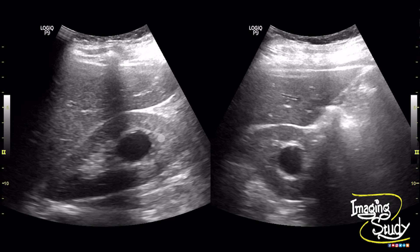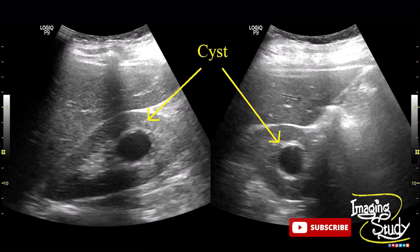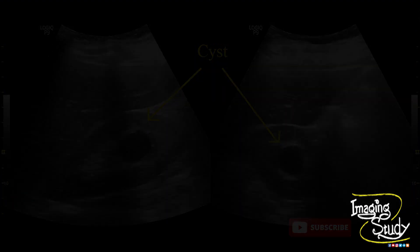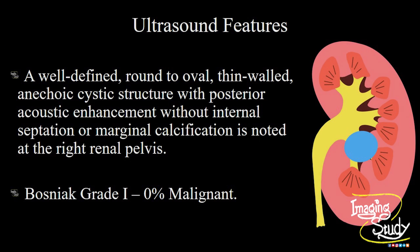Here are the longitudinal and transverse sections of this renal parapelvic cyst. In summary, a well-defined round to oval thin-walled anechoic cystic structure with posterior acoustic enhancement and without any internal septation is noted at the right renal pelvis. According to these findings, this cyst is Bosniak Grade 1, which suggests no chance of malignancy.